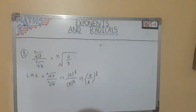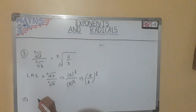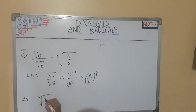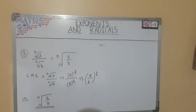Now the power is in the form of 1 by n, so we can write it as n root of a upon b. Therefore, this is the answer, and LHS is equal to RHS.